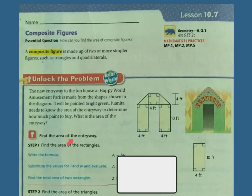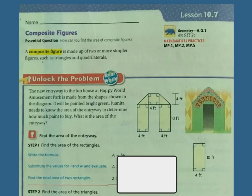First we need to find the area of the entryway, and the way to do that is by breaking it up into shapes that we know how to find the area of. So we have our rectangle, our square, another rectangle, and two triangles. The area of a rectangle is base times height, the area of a square is base times height or s squared, and the area of the triangles is base times height divided by 2.